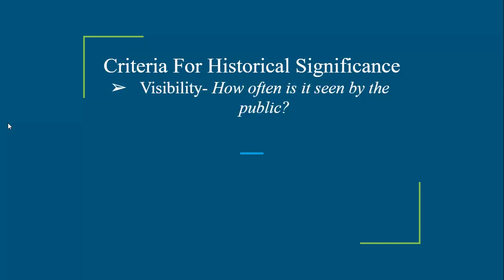First of all, you have to look at visibility. Was this something that was seen by the public? Was it publicly available for people at the time to see and be aware of? If it's not something that's publicly seen and many people know about it, then it's probably not that historically significant. If it's just an isolated incident that only people in that area or neighborhood would know, then it doesn't fit that criteria. If everybody knew about it, then it begins to fit the criteria for historical significance.